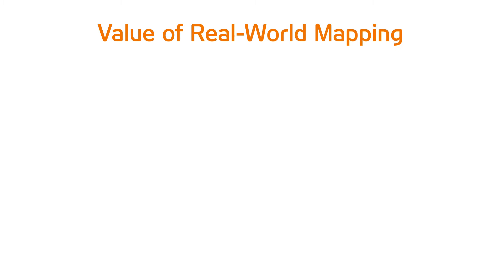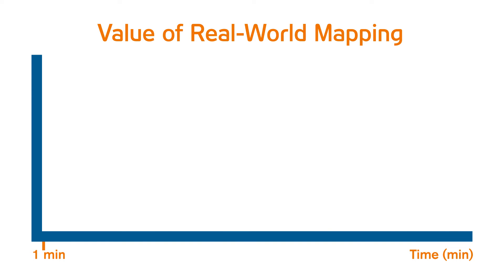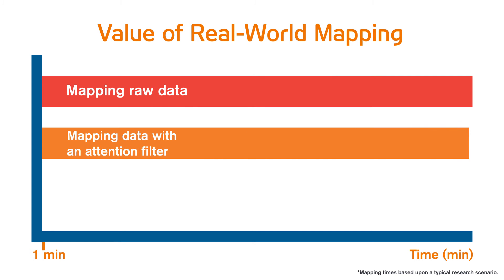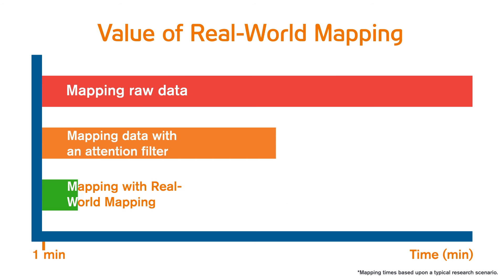Let's put this into a quantifiable context. If you have a one minute clip to map, based upon a typical research scenario, this will take 60 times the length of the clip to code — so in this case, one hour. If you are coding using an attention filter, then it will take about 30 times the length of the clip, so about half an hour in this case. However, if you use real world mapping, it will take between two to five times the length of the clip depending on the computer's performance, so less than five minutes in this case. This can save hours of time and therefore a substantial amount of budget also.